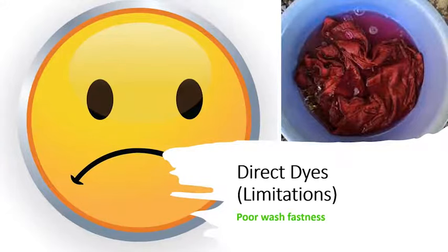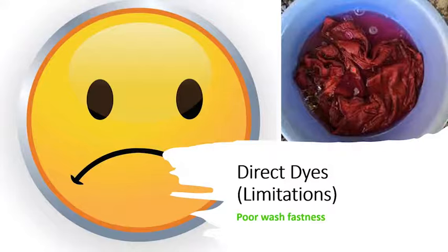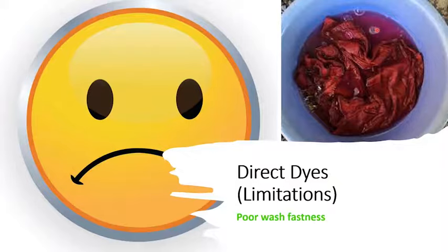The limitation of direct dyes is poor wash fastness. Whenever you wash the fabric, you will see color bleeding out, as shown in this picture — when you dip the fabric in water, it bleeds. In other words, if these dyes are very easy to apply, they are also very easy to remove, because they are fixed only by van der Waals forces and hydrogen bonding — there is no covalent bond or ionic bond.